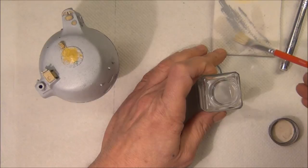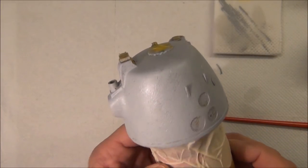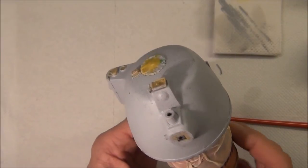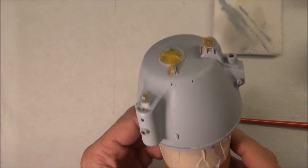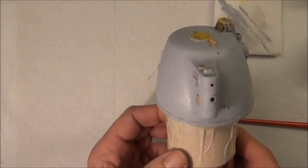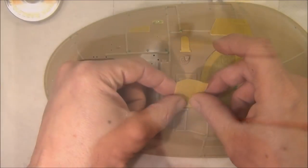The lacquer thinner cleans the Mr. Surfacer out real easily. And here's the turret right after stippling. You can see where it's still a little damp. But it dried very rapidly - within 30 minutes or less, it was completely dry.